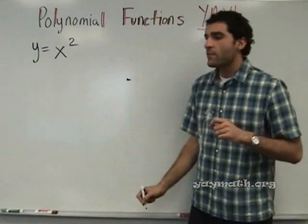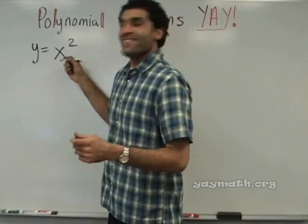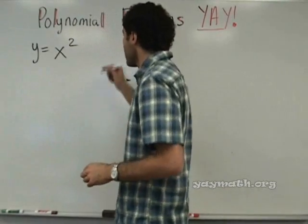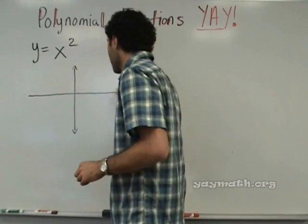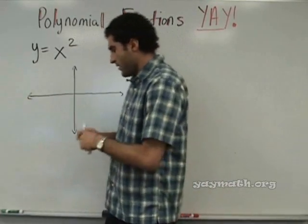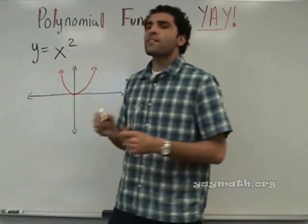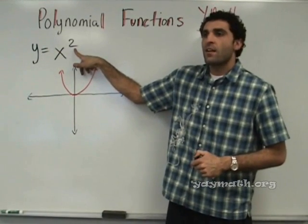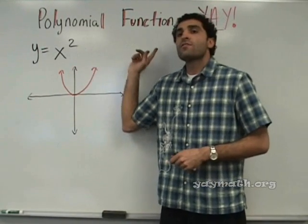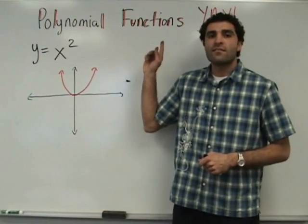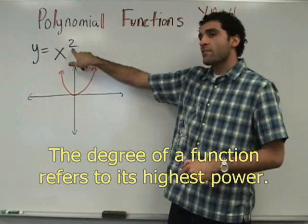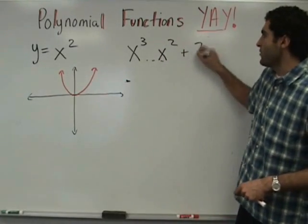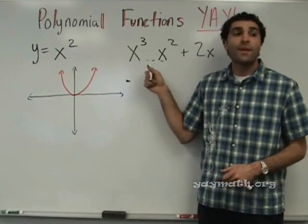Y equals x squared. Alright. What does y equals x squared look like? A parabola. Good. So notice — a parabola. Let's do it in red. Now, first we're going to start defining some terms. The degree of this term is degree 2. This is a second degree function. The degree is the biggest power. So degree 2. Y equals x cubed would be degree 3 — a third degree function. X squared is a second degree function. The biggest power. So x cubed — third degree function. It could be like x cubed plus x squared plus 2x, and on and on, but this is still a third degree function. It's the biggest power.